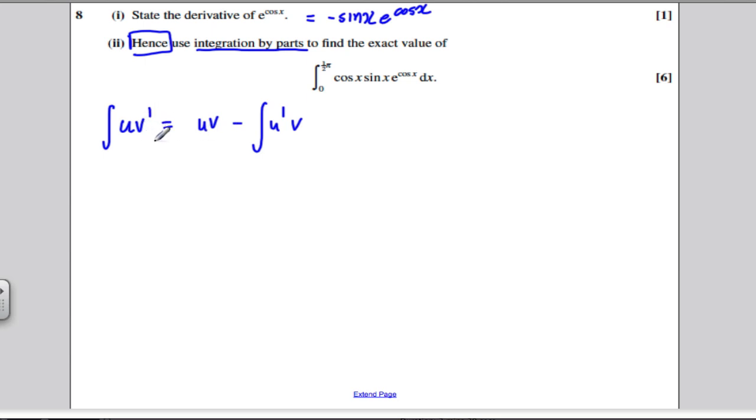Our v is chosen by the one we can easily integrate. Now we know here, sine x e to the cos x. Looking at part one, we know that if we differentiate e to the cos x, we get this. So going backwards, if we integrate this, we get e to the cos x. So if we integrate sine x e to the cos x, we would get minus e to the cos x. So v dash would be best chosen to be this, because we can integrate it well, and therefore u would be cos x.